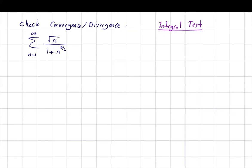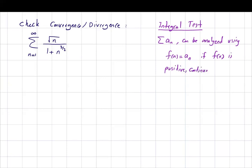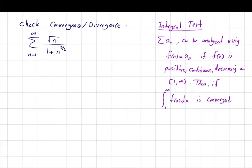In using the method of integral test, remember that a series like a_n can be analyzed using f(n) = a_n if this function is positive, continuous, and decreasing on the interval 1 to positive infinity. Then if all of these conditions are met and the integral of f dx from 1 to infinity is convergent, we can conclude that the series is also convergent.